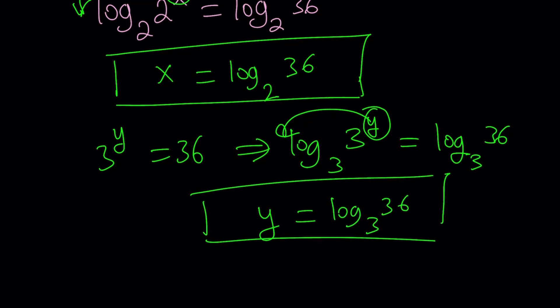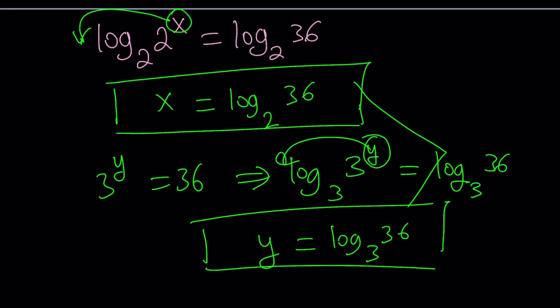So x and y are both log 36, but notice that they are different bases. So the base matters, right? In other words, this is the question you're asking. x is the number. So when I raise 2 to the power of that equals 36. So 2 to the power of what number equals 36? The answer is x. 3 to the power of what number is 36? The answer is y. And if I ask you which one is larger, hopefully you can tell me that x is going to be larger because the base is smaller. To get to 36, you have to raise it to a higher power. Literally, a higher power.